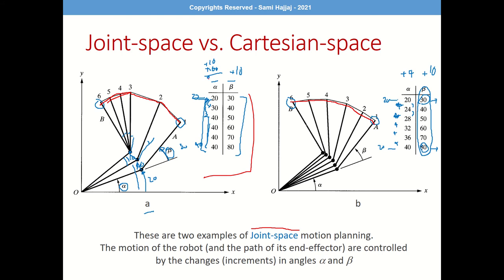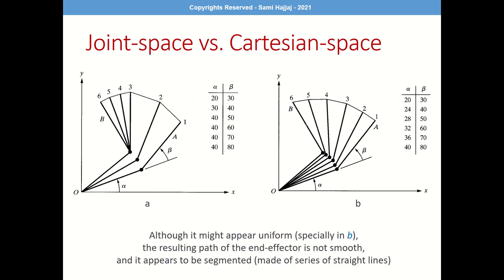No matter what you do in Case A or Case B, the resulting path will always be a series of straight lines — segmented increments between start and end. Although Case B looks a bit more uniform, it's still a series of straight line segments. This could be sufficient for some applications, but at some point you'll see that this is not enough.